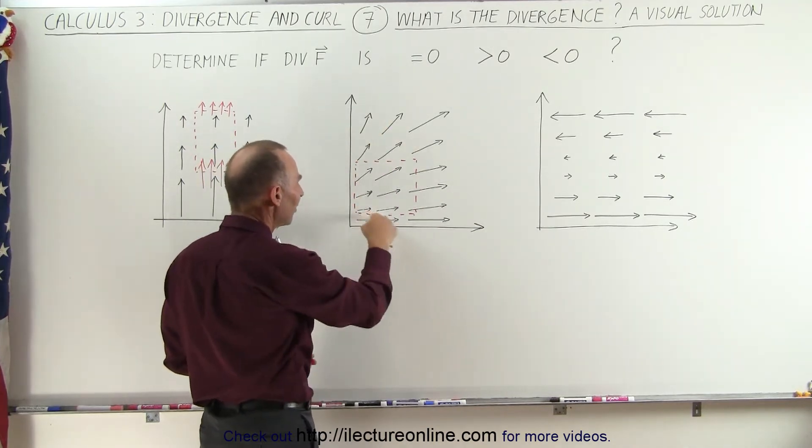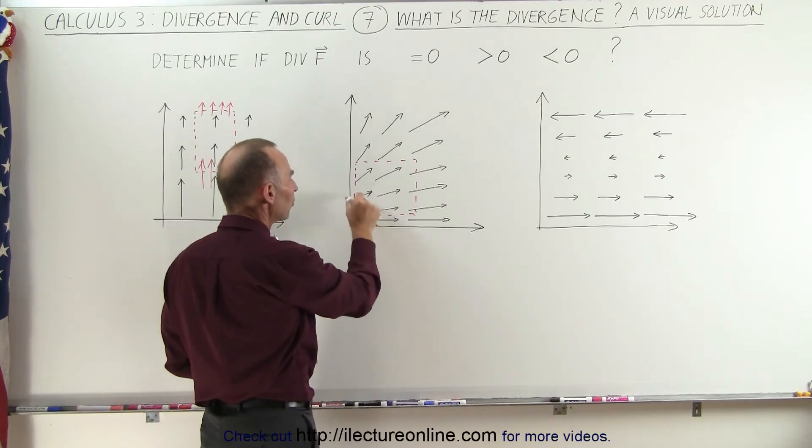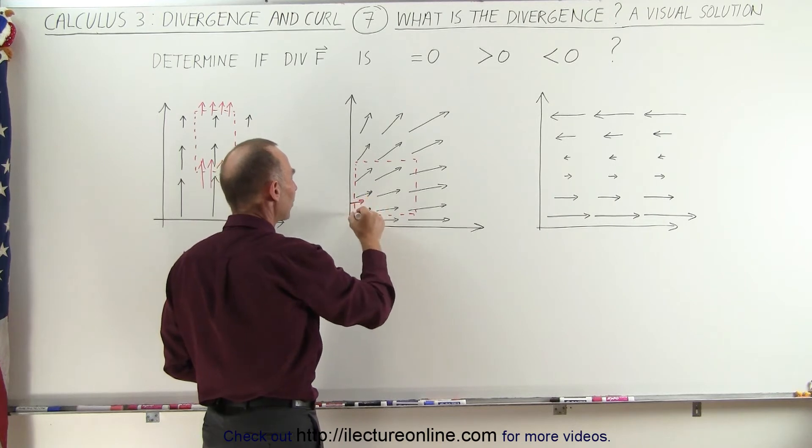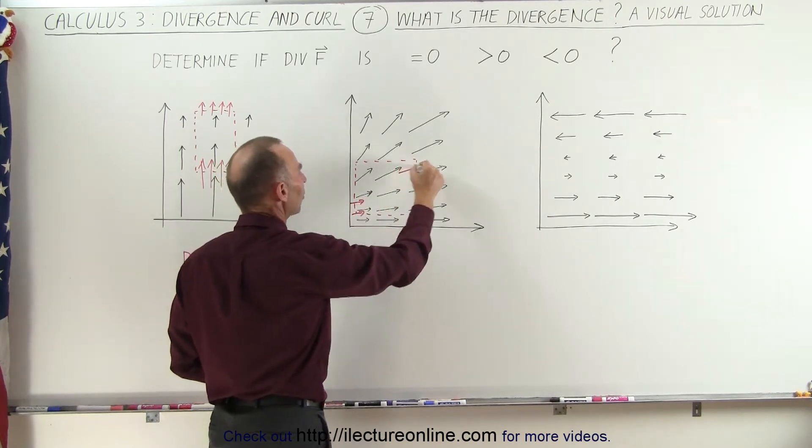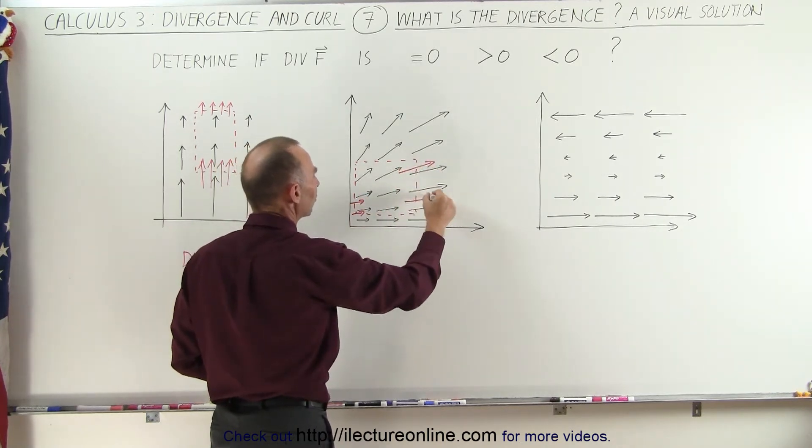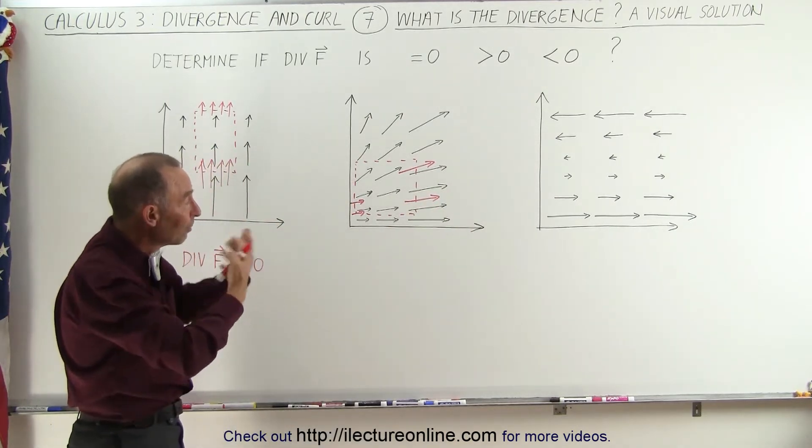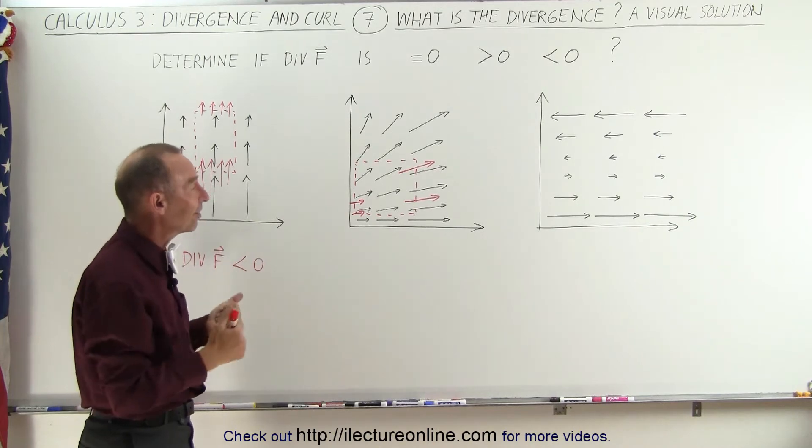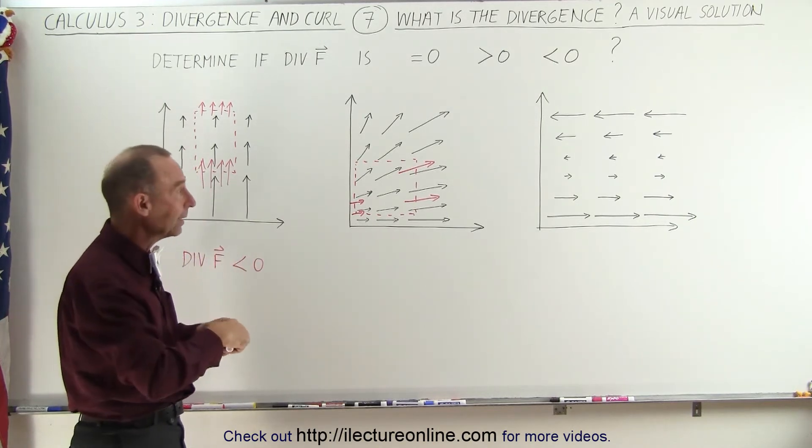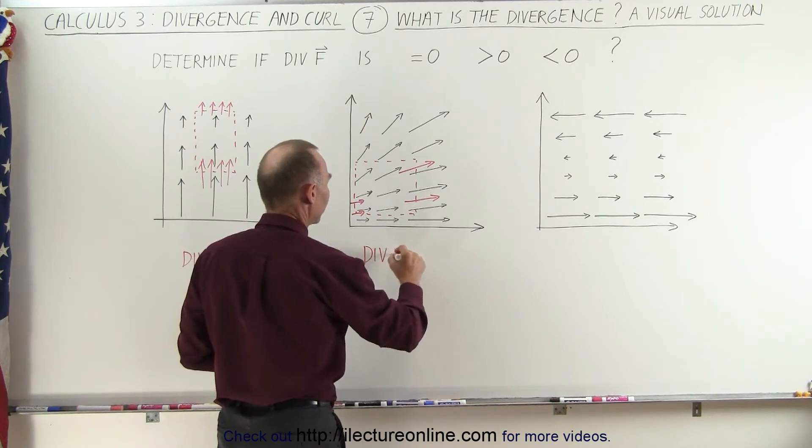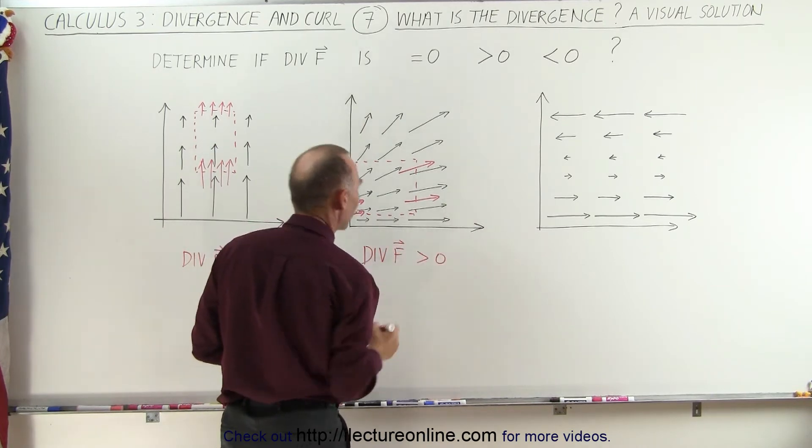Which means that on this side of the box, the arrows will be smaller. On that side of the box, the arrows will be larger. So we have smaller arrows over here, and we have larger arrows on the other side of the box, which again, in this case, indicates that it appears as if flux is being created inside the box, more is coming out than going in. And therefore, the divergence of the vector field must here be greater than zero.